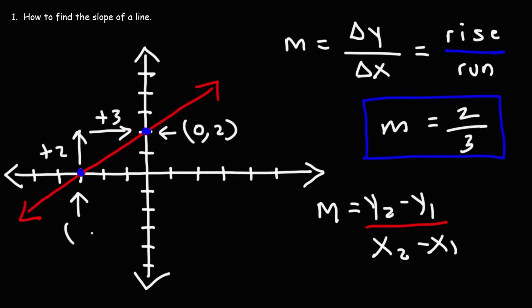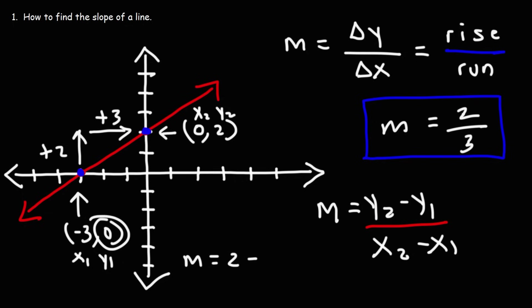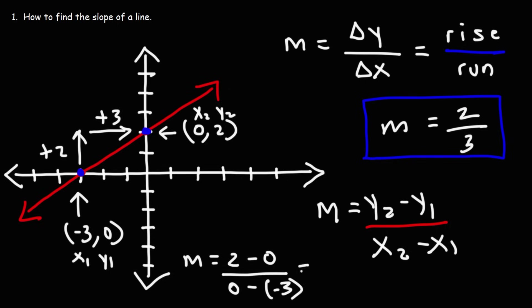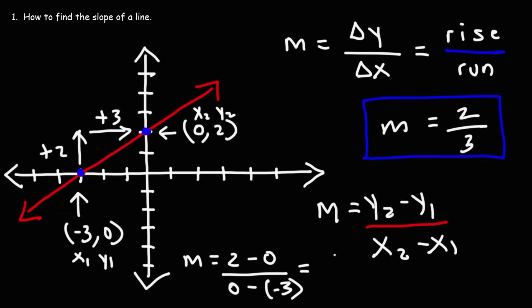The X intercept has an X value of negative 3 and a Y value of 0. Let's call the X intercept X1 and Y1, and the Y intercept X2 and Y2. Plugging those in: Y2 is 2, Y1 is 0, X2 is 0, X1 is negative 3. The change in Y — Y2 minus Y1 — is 2 minus 0, which equals 2.